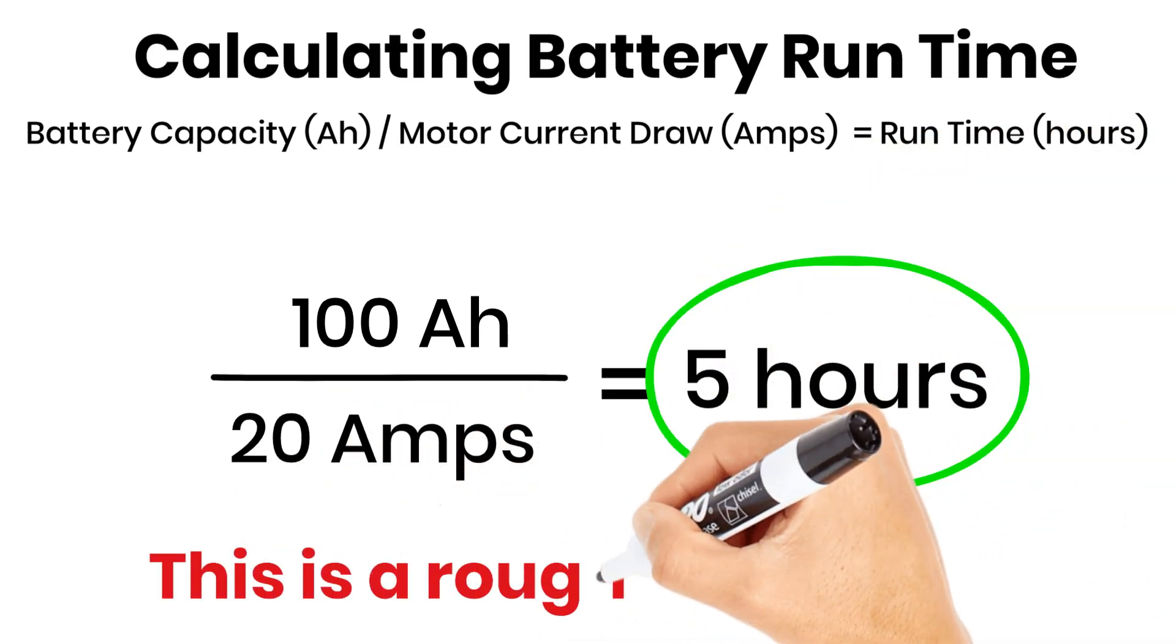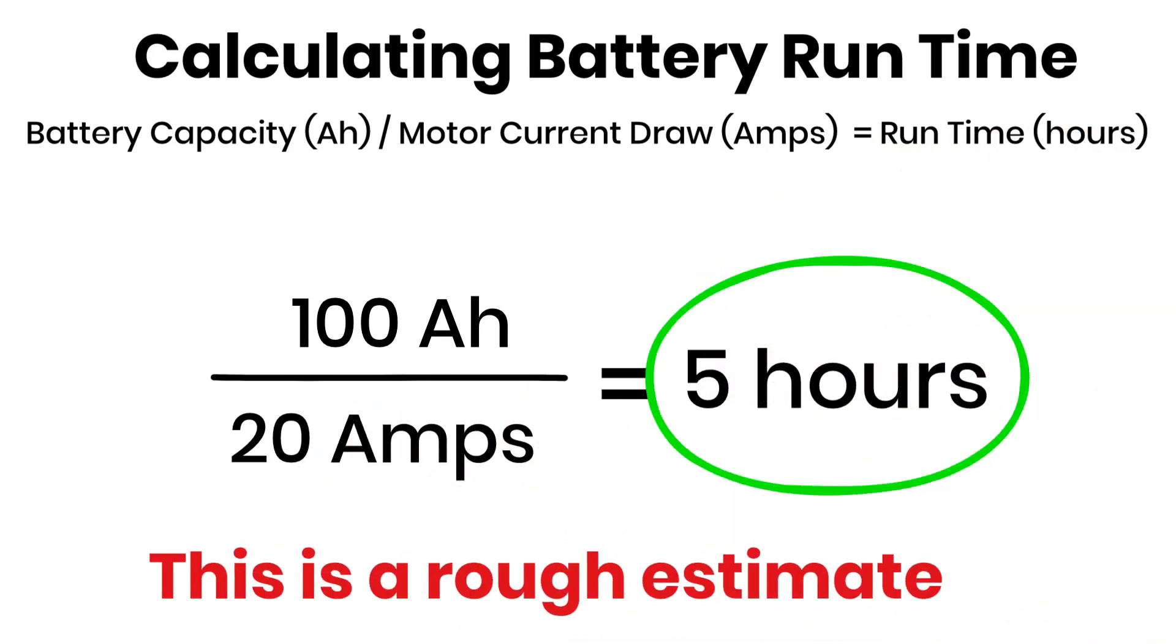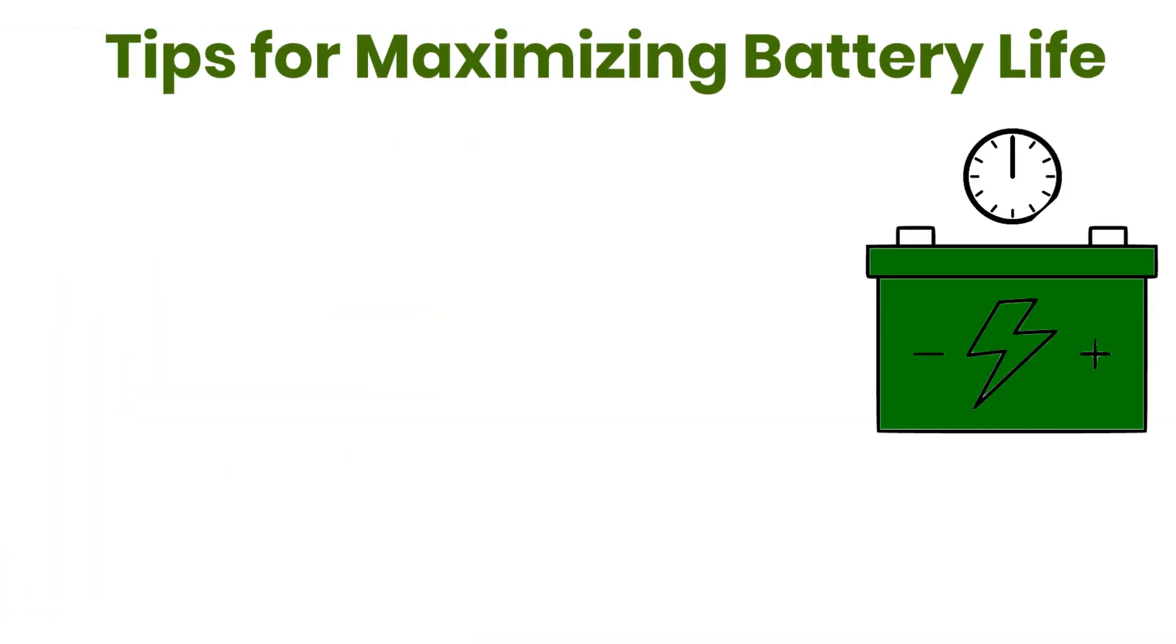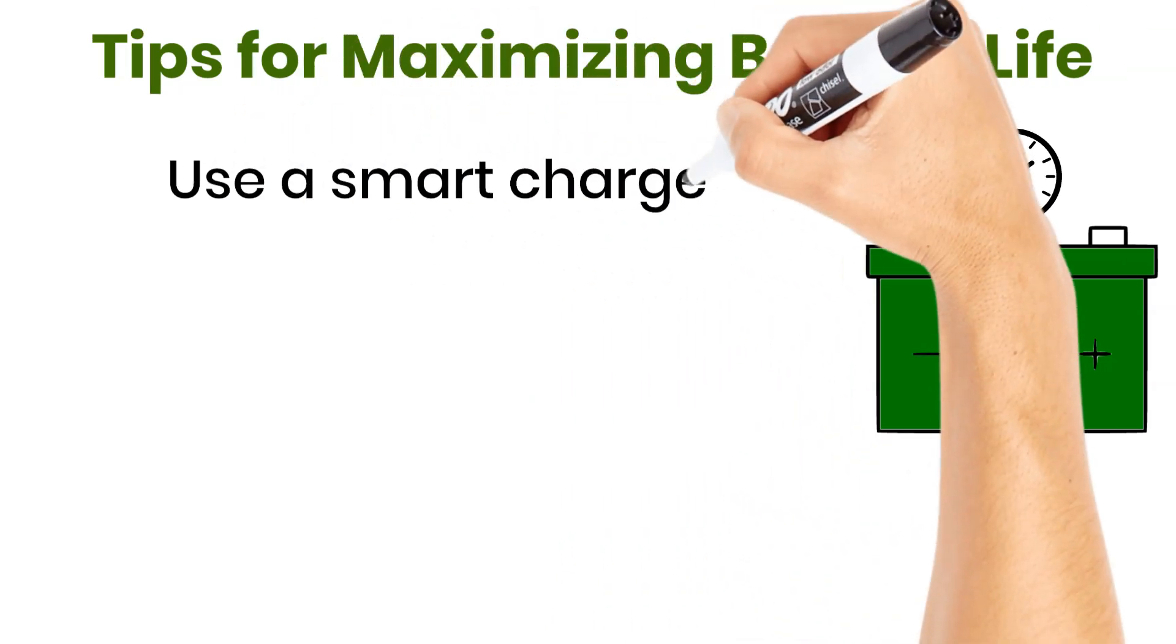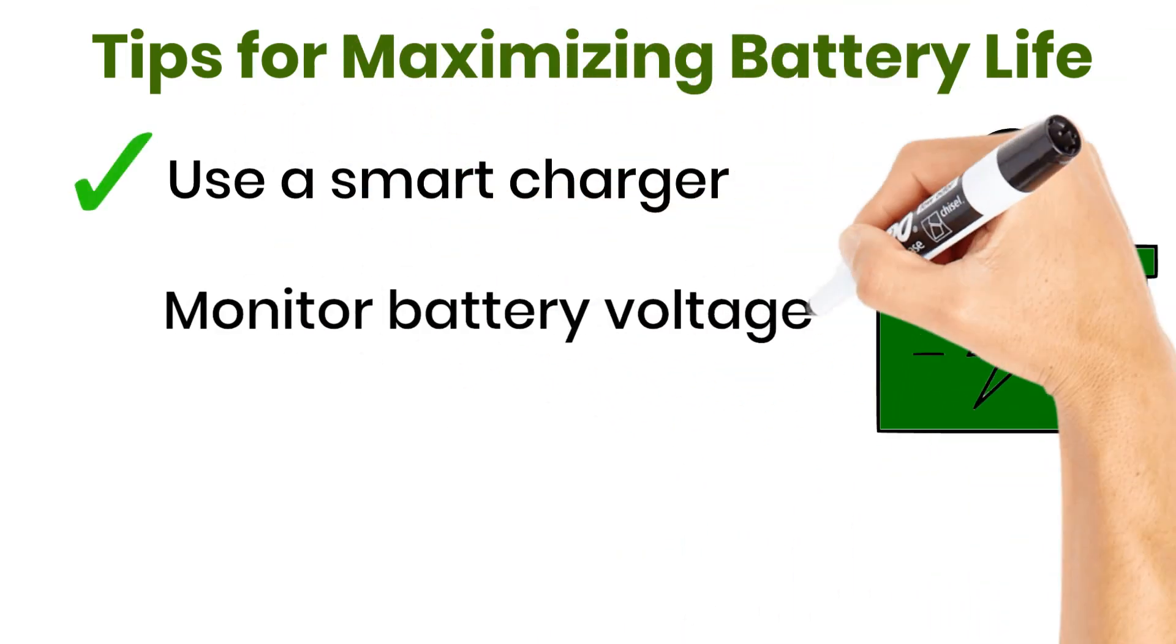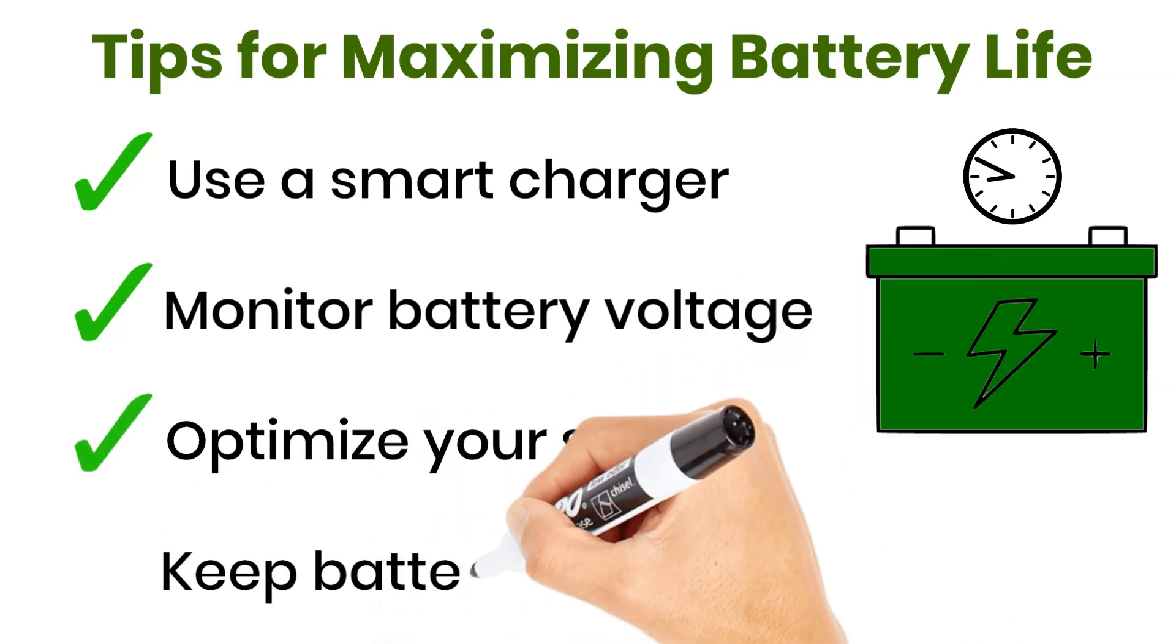Remember, this is a rough estimate. Real-world conditions can affect actual run time. To get the most out of your battery, consider these tips: use a smart charger, monitor battery voltage, optimize your speed, and keep battery connections clean.